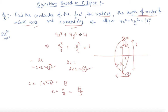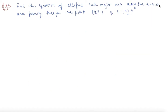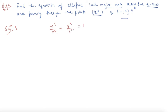Now let's discuss one more question. Here is another question in which we have to find out the equation of the ellipse. We are given that the major axis is along the x-axis and the ellipse is passing through two given points. We can put these two points directly into the standard equation of the ellipse. We need to find out basically a and b.